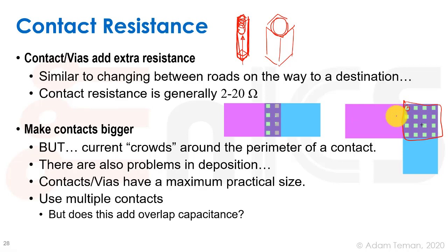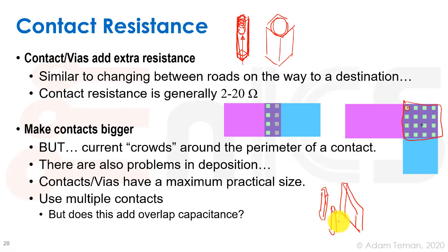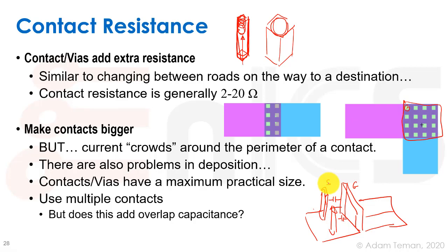There is also a question of how contacts add overlap capacitance. For example, placing contacts next to a gate — where the diffusion is below and the gate is nearby — creates coupling capacitance that adds to the overlap capacitance of the gate to the source. We have to decide what's better: accepting higher overlap capacitance or achieving lower resistance to the diffusion.